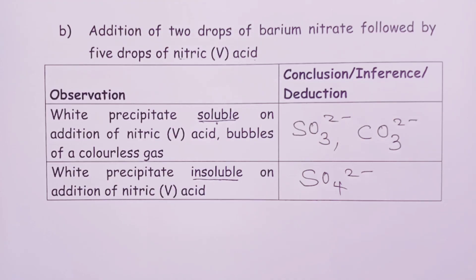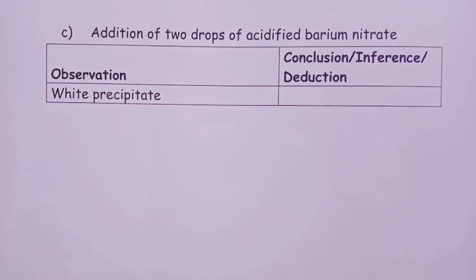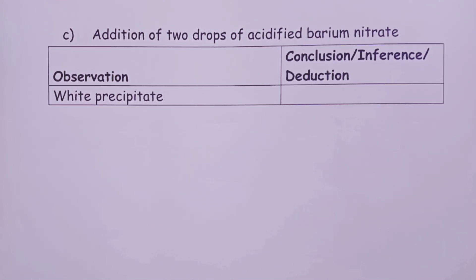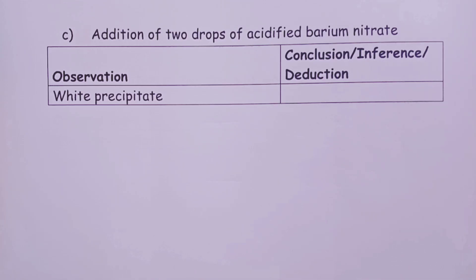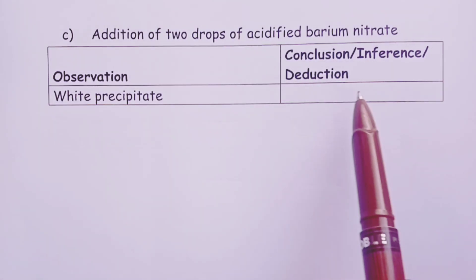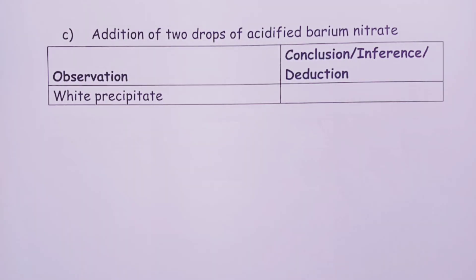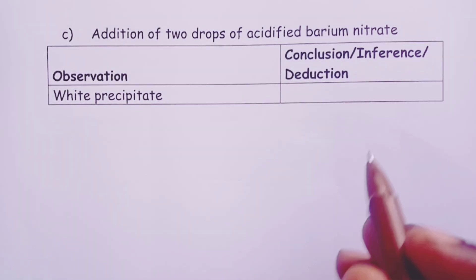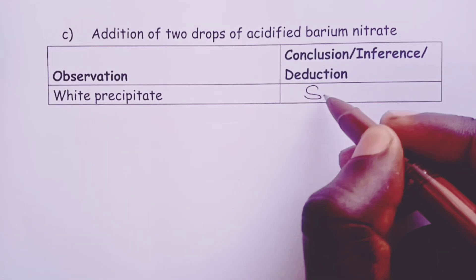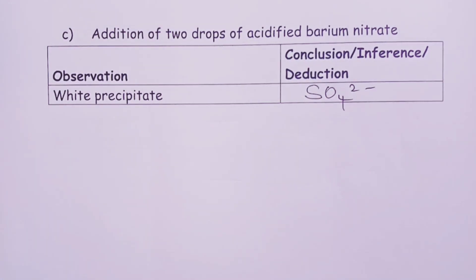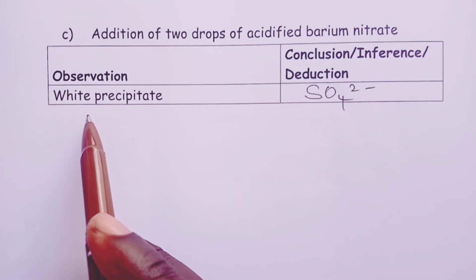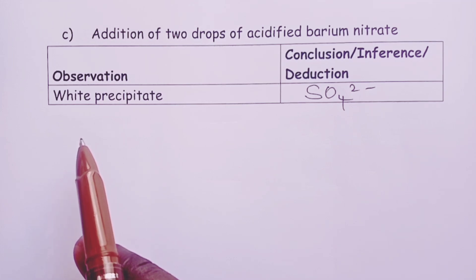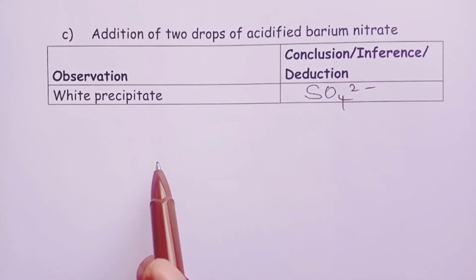The third instruction concerning barium nitrate expects the candidate to add two drops of barium nitrate which is already acidified to the unknown solution. If we see a white precipitate, then we conclude sulfate ions are present. The reverse is also true: when we don't see a white precipitate, then sulfate ions are absent.